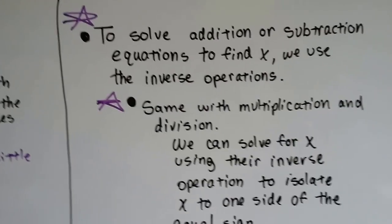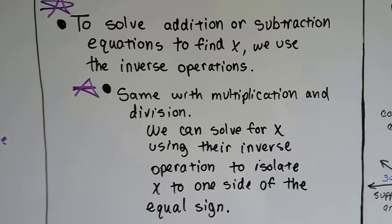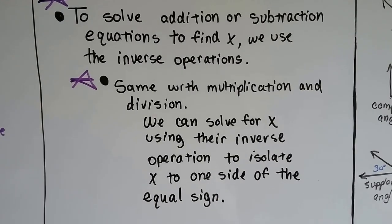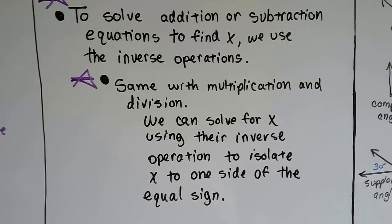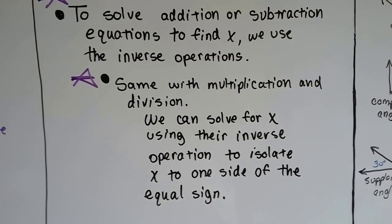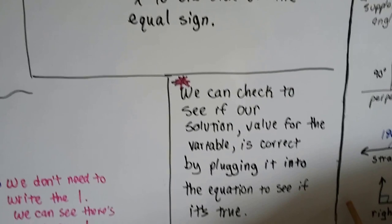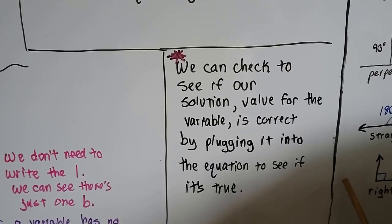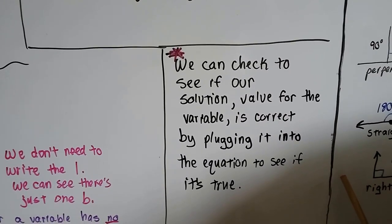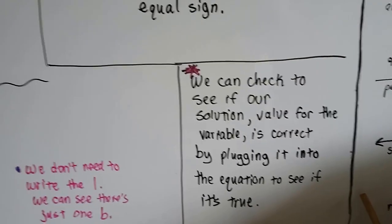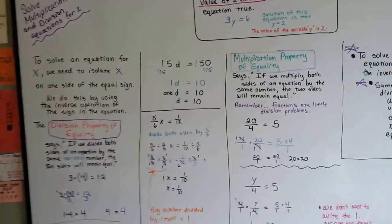So remember, to solve addition or subtraction equations to find x, we use the inverse operations. It's the same with multiplication and division. We can solve for x using the inverse operation to isolate x to one side of the equal sign. And remember, to check to see if our solution is correct, the value for the variable, we plug it into the equation to see if it's true. And if it is, we know we've got the right answer. We know we've found the value of the variable.